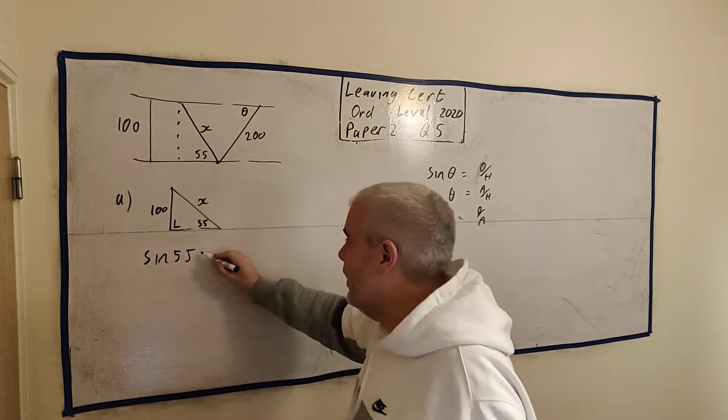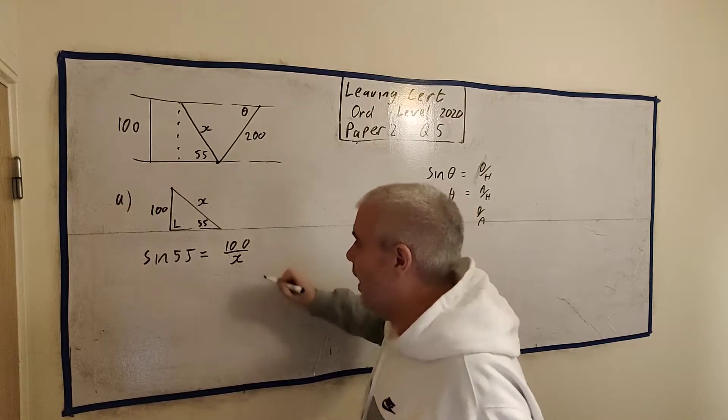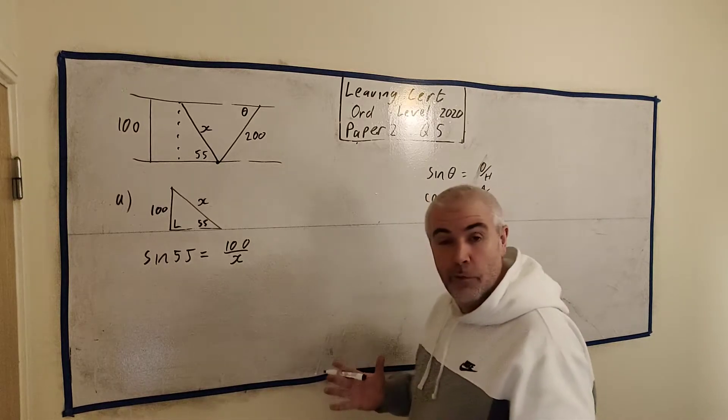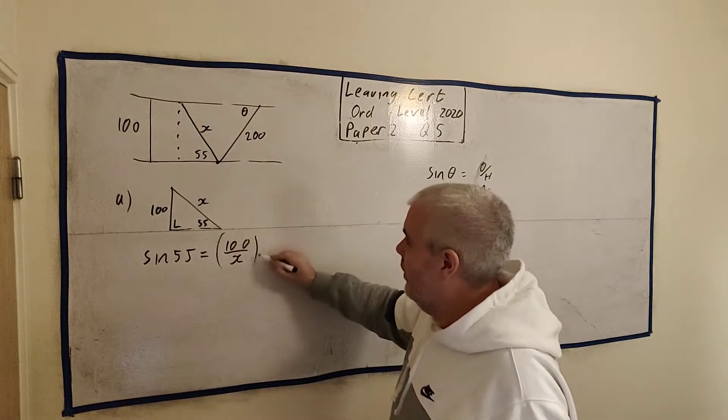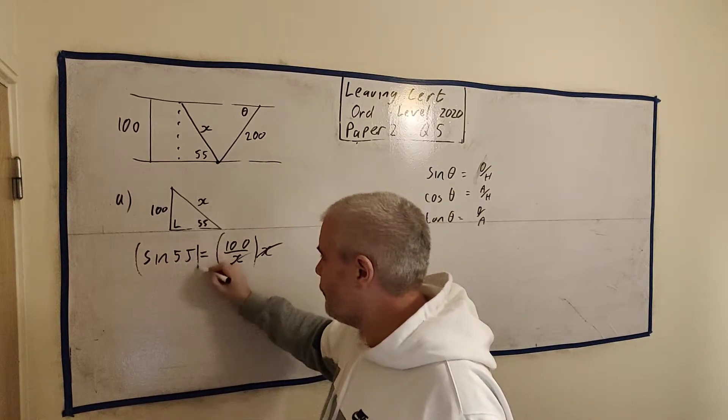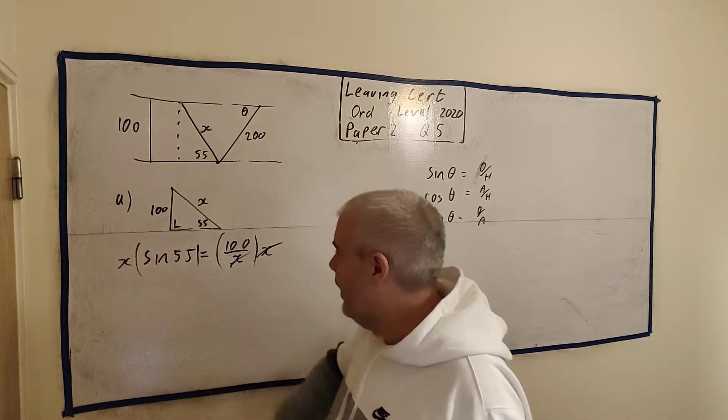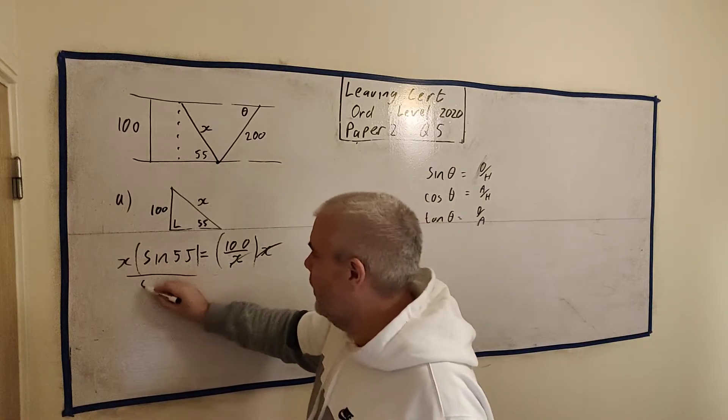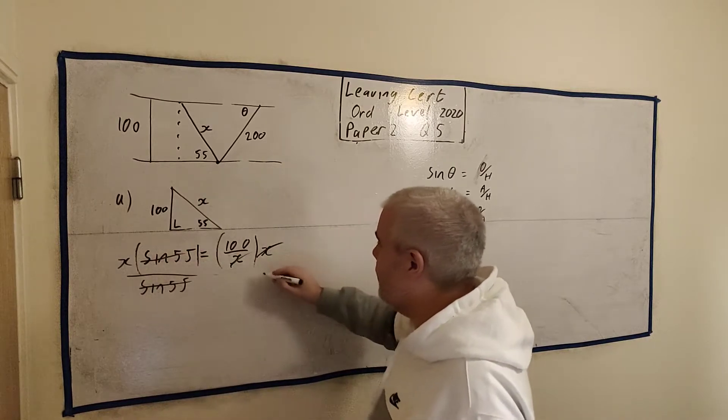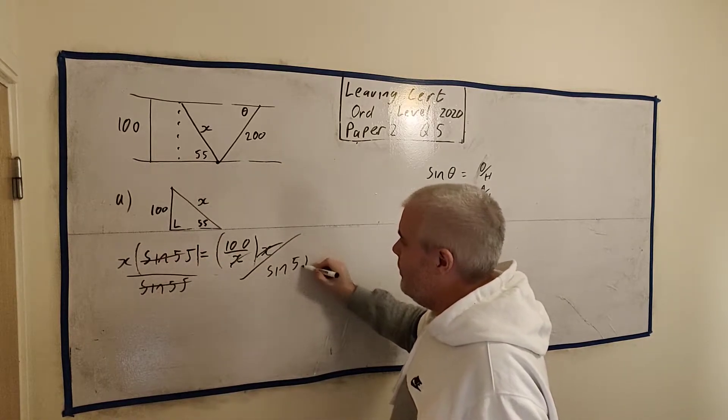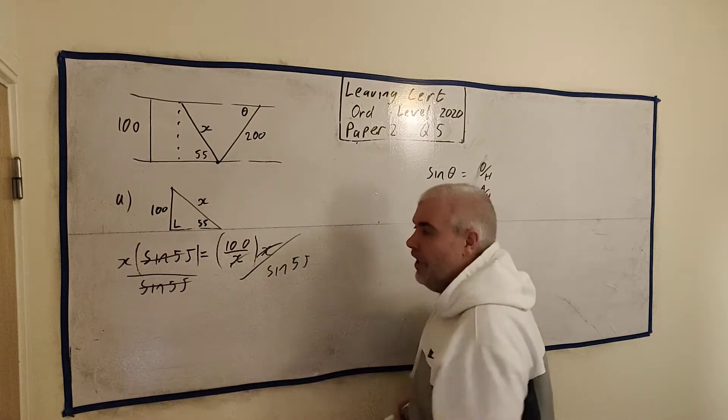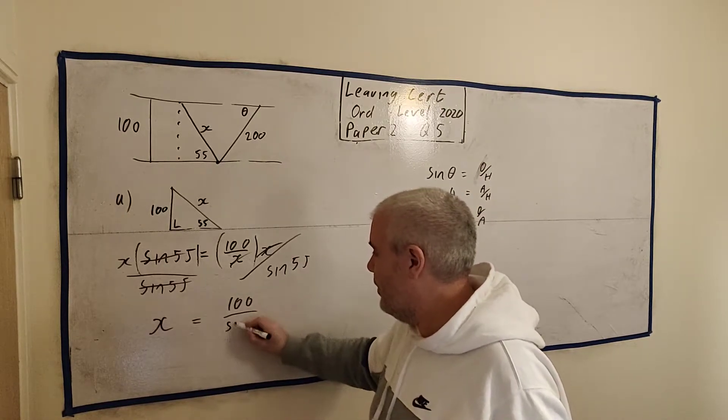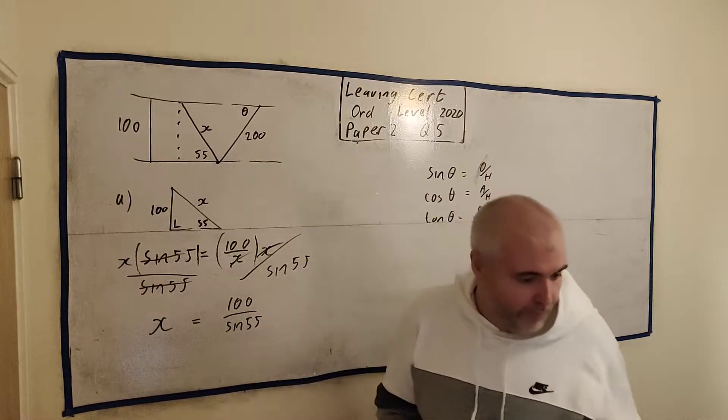It has everything we either know or need. So sine 55 is equal to 100 divided by x. We know everything about this except x. So we can just move it around until we get x equals. So let's multiply both sides by x. Multiply this by x, it disappears. Multiply the left by x. And then let's divide both sides by sine 55. It's just a number, a complicated-looking number. Divide both sides by sine 55, that disappears. And this side, divide by sine 55.